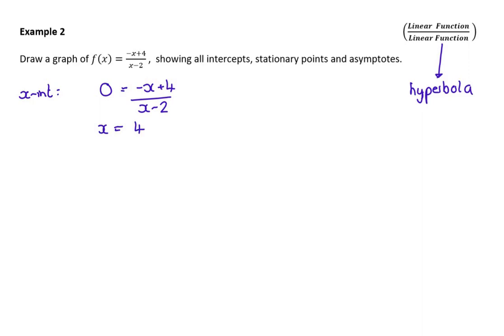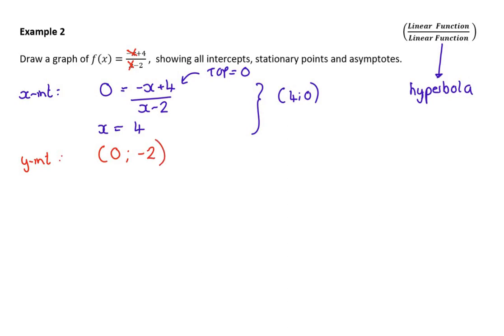Basically x equals four, because only the numerator needs to equal zero, giving x-intercept at four, zero. The y-intercept: substitute x equals zero — you get four divided by negative two, which is negative two. At AP Maths level you don't even have to show substitution, just sub in zero quickly. Now for stationary points — if I find the derivative of a quotient and try to solve it, we all know a hyperbola has no stationary points. So this is an example where realizing that linear divided by linear is a hyperbola makes your life much easier.